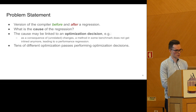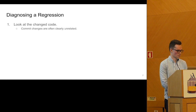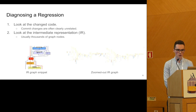It's not just about inlining. There are tens of different optimization passes in the compiler that perform optimization decisions. So how could we diagnose such a problem? The first idea that you might have is to look at the code-level changes. However, we found that the committed code is often clearly unrelated to the true cause, due to the complexity of the system.